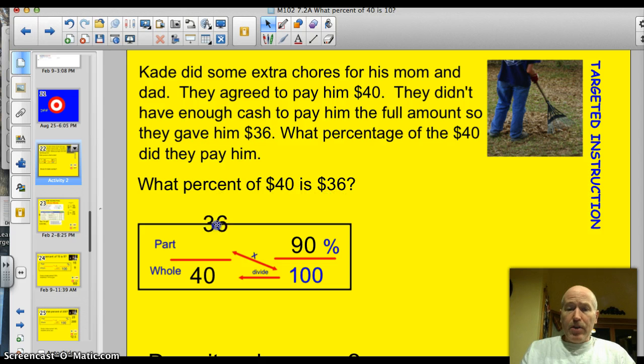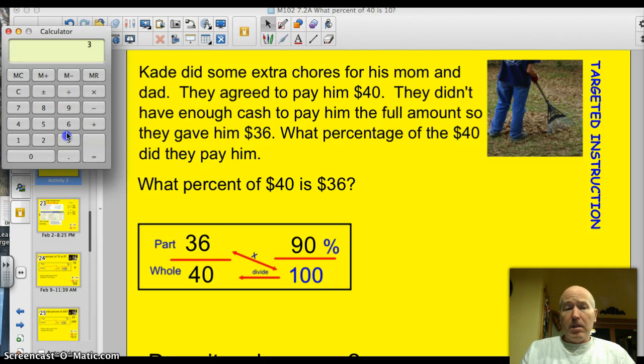Cade did some extra chores for his mom and dad. They agreed to pay him $40. They didn't have enough cash to pay him the full amount, so they gave him $36. What percentage of the $40 did they pay him? Well, I got $36 here and that's the part of it that they did pay. Here's the $40, which is the whole amount. If I take $36 and I multiply that times the 100 and then I divide it by the whole, I get 90. And that is the percent.